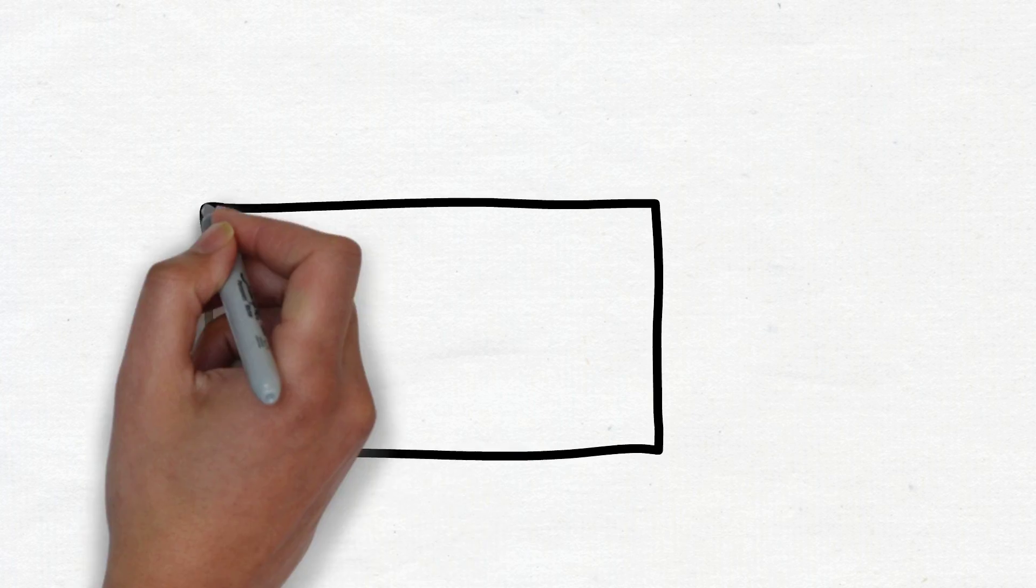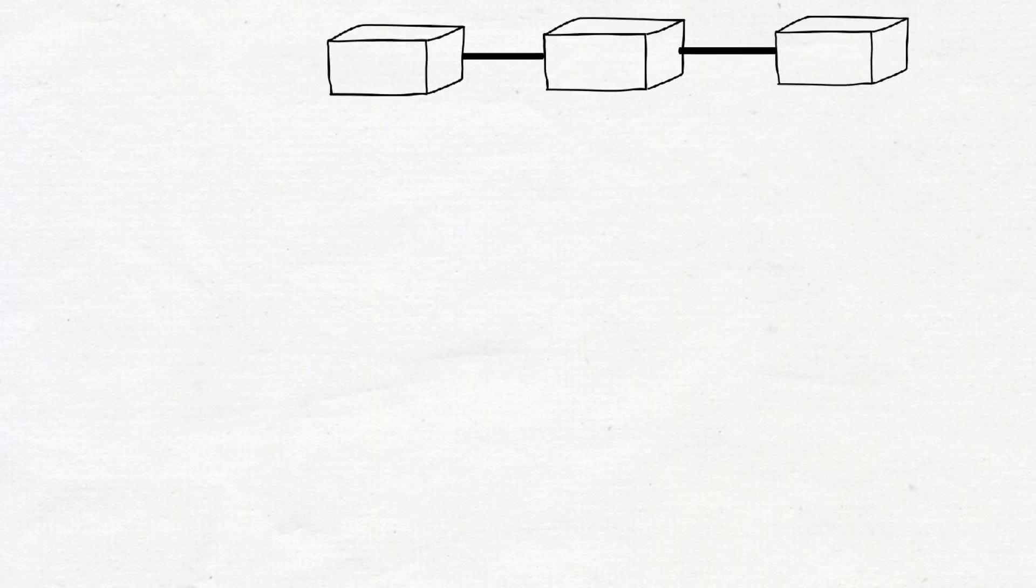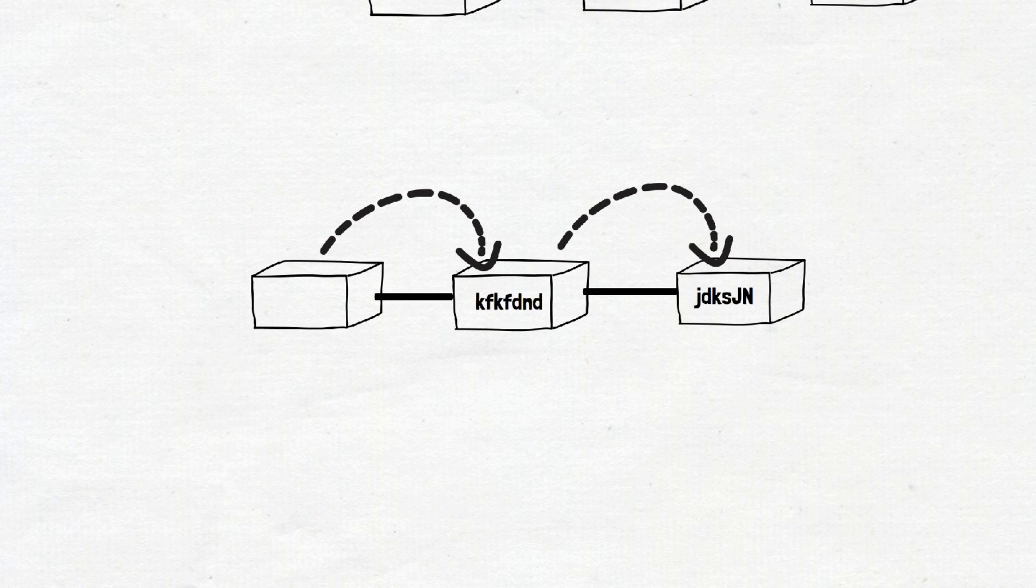Each transaction or record on the ledger is stored in a block, and a number of blocks that come together to make a chain is called a blockchain. Now take the example of the Bitcoin blockchain. Each block has some transaction information and a hash of the previous block.